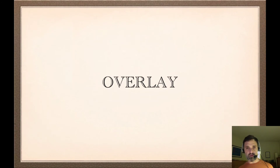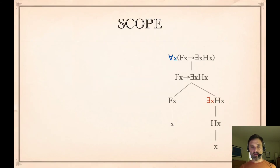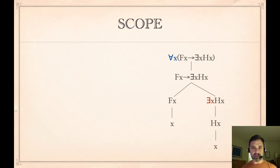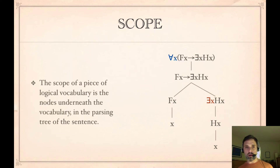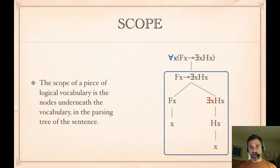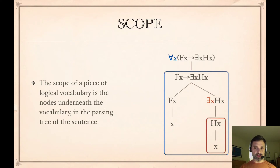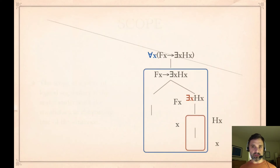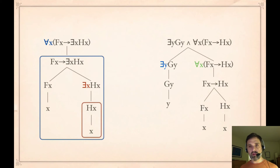Now we also need the notion of overlay. If we look at the sentence 'for all x, if Fx then some x Hx', it's a little bit hard to read. Remember first of all the notion of scope: the scope of a logical operator is the part of the tree that it's above. So the scope of the universal is the entirety of the tree besides the top node, whereas the scope of the existential is just the Hx down at the bottom, because that's the only part of the tree that it's above.